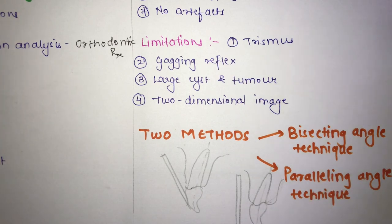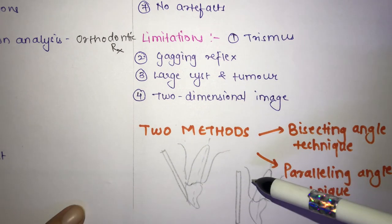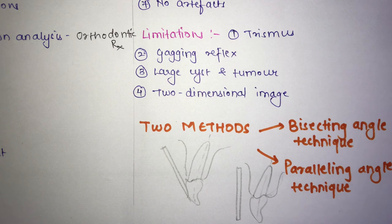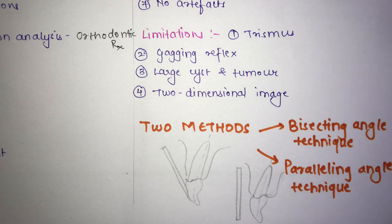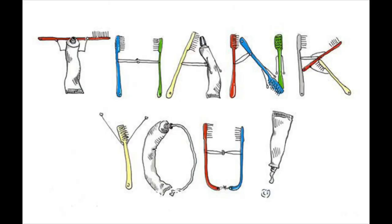There are two methods for periapical radiography: the bisecting angle technique and the paralleling angle technique. The bisecting angle technique is based on the rule of isometry, also known as Cisensky's rule. These techniques, along with bitewing and occlusal radiography, will be covered in depth in upcoming videos.